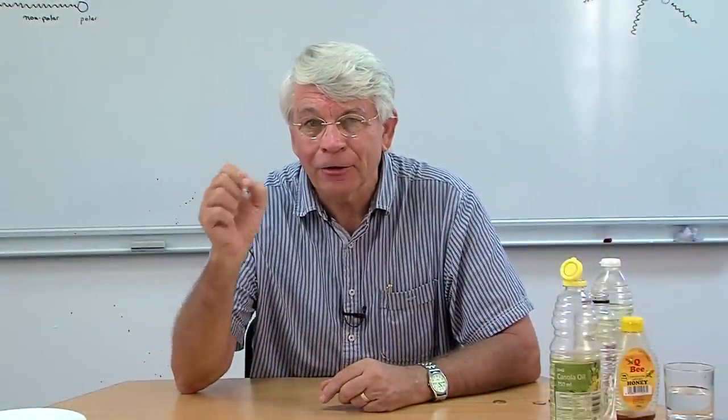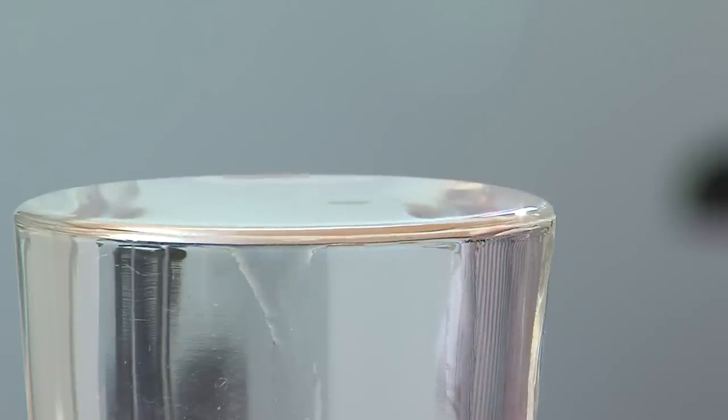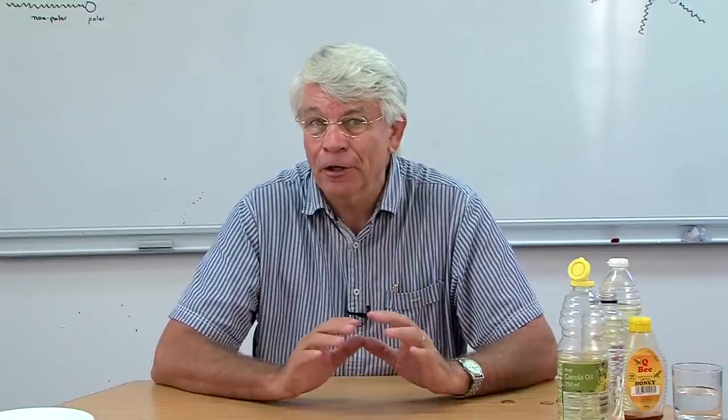Let's see what happens when we add a single drop of detergent to the meniscus on this glass of water. Wow — the whole thing has collapsed! What's happened to these hydrogen bonds? Somehow those detergent molecules have broken those bonds. How does that work? For that we really need to have a look at the nature of the detergent molecule.